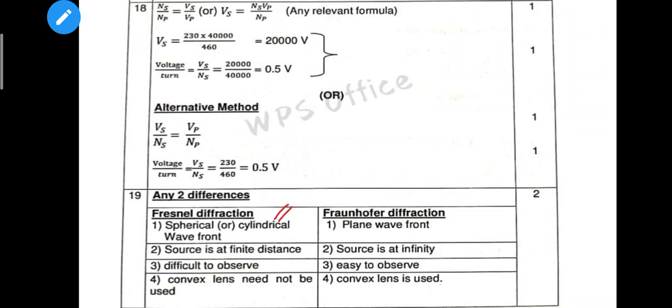The next question is Fresnel diffraction and Fraunhofer diffraction — any two differences, so 2 × 1 = 2 marks. However, it is better to write four points.